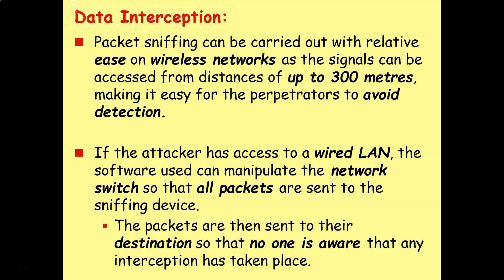Packet sniffing can be carried out with relative ease on wireless networks, as the signal can be accessed from distances of up to 300 meters away, making it easy for perpetrators to avoid detection. If the attacker has access to a wired LAN, the software used can manipulate the network switch so that all the packets are sent to the sniffing device. The packets are then sent on to their destination so that no one is aware that any interception has taken place.